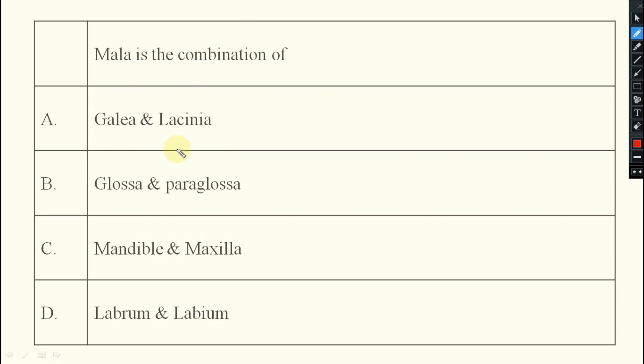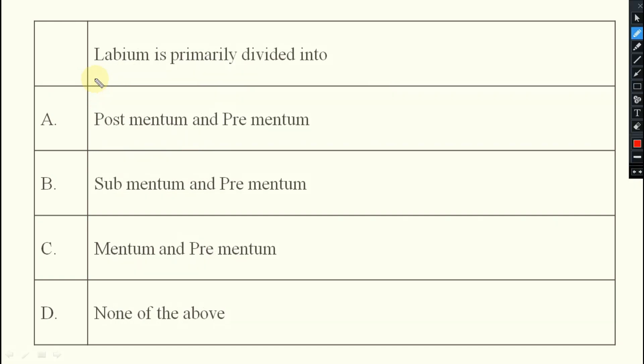Next. Mala is the combination of what? Galea, lacinia, glossa, paraglossa, mandible, maxilla, or labrum and labium. So you remember that mala means M for mala, M for maxilla. In maxilla, galea and lacinia is there. So option A is your right answer.